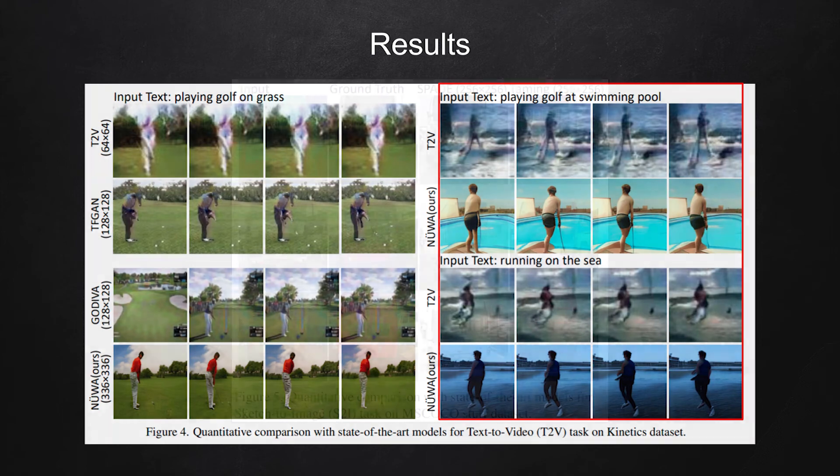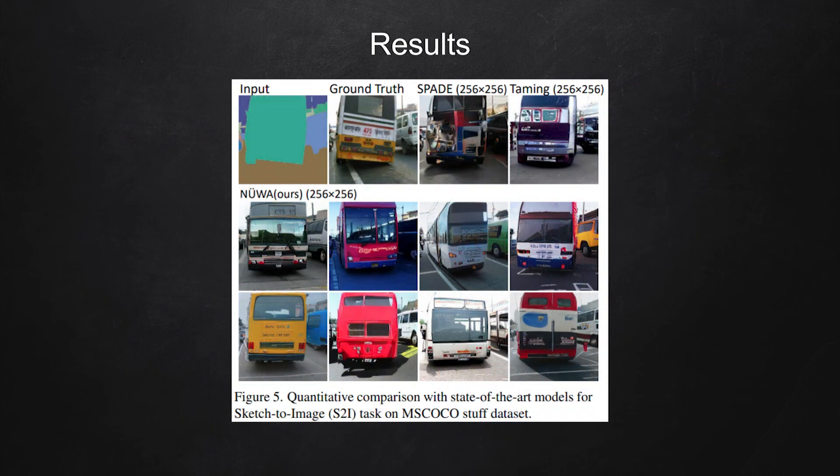This figure shows the result of the NEWA model in sketch to image task. In the sketch, it says this green region should be a bus, this blue region should be another car, and this brown region should be ground. Given this sketch as input to the model, the model produces realistic images like in these two rows.